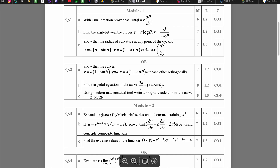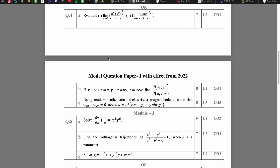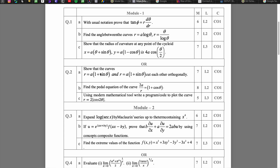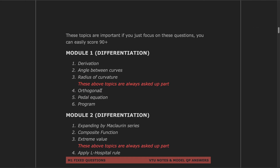This is the model question paper. In your examinations, each module has two questions and each question has three sub-questions. M1 has a pattern: derivation, angle between curves, and radius of curvature always come in the upper part, while orthogonal, pedal equation, and program always come in the lower part. So you are a bit luckier — you can easily score higher.